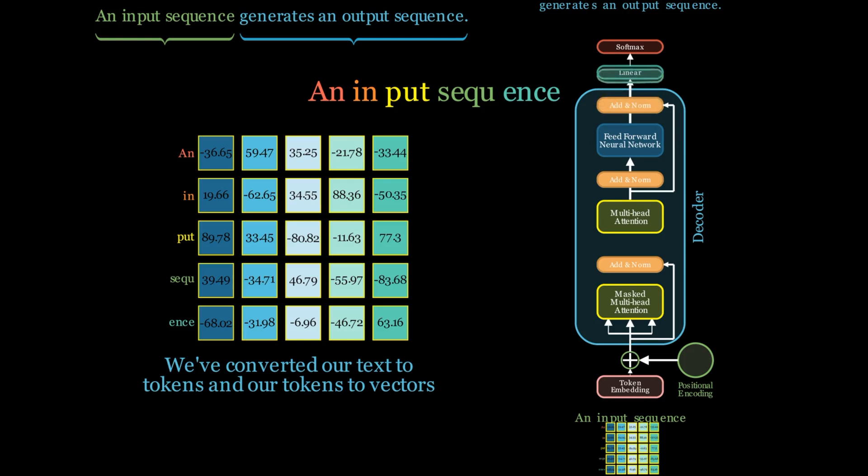After the forward pass, the decoder generates its prediction of the completion, also in the form of a tokenized matrix. This generated sequence is compared to the sequence that we're trying to predict from our test dataset. There'll be an error and this error is back propagated through the network and the weights and biases are nudged and tweaked to minimize the cost function that we apply.